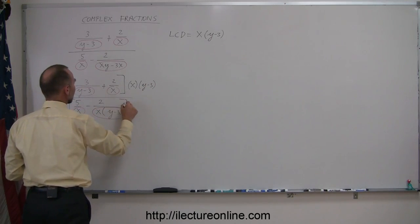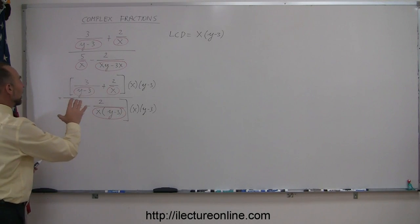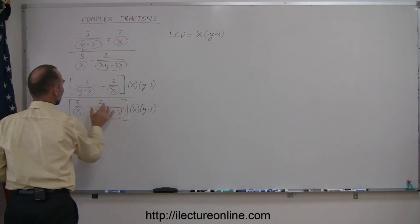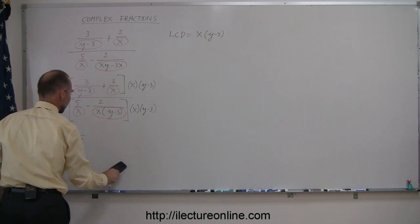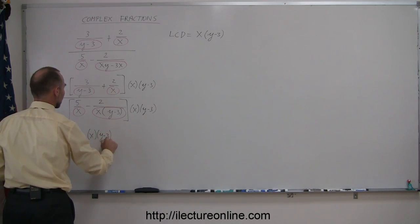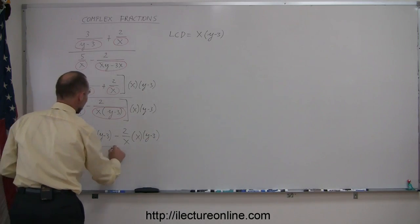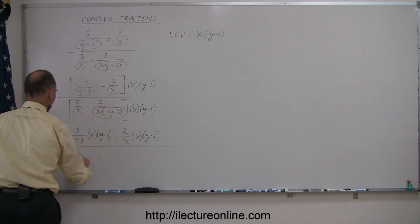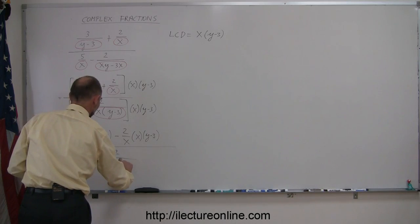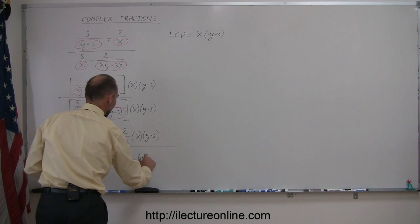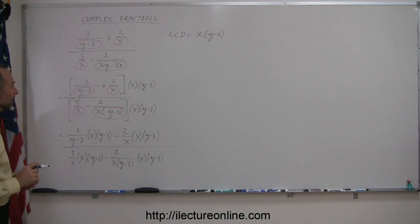I'm going to multiply this denominator by x times y minus 3. Now this gets a little bit more complicated, so I'm going to write this out — multiplying each fraction in the numerator and denominator by x times y minus 3. That's 3 divided by y minus 3 times x times y minus 3, minus 2 over x times x times y minus 3. The same with the denominator: 5 over x times x times y minus 3, minus 2 divided by x times y minus 3, times x times y minus 3. I distributed x times y minus 3 over each of the fractions in my complex fraction.